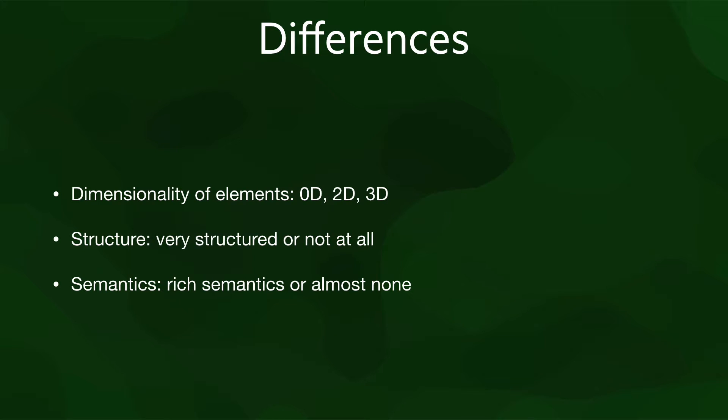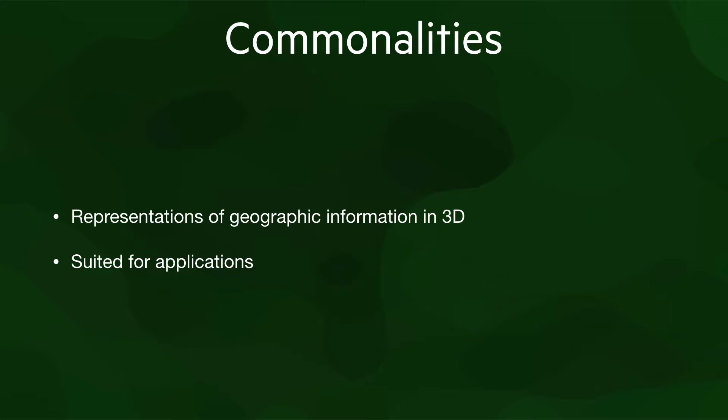The three examples we covered are all very different. All of these representations consist of elements of different dimensionality: 0D elements in a point cloud, 2D elements in a 3D city model, and 3D elements in a BIM model. The different representations can also have a lot of structure or very little, and a lot of semantics or almost none. But the important thing is that they are all representations of geographic information in three dimensions, and each of them is suited for particular applications.